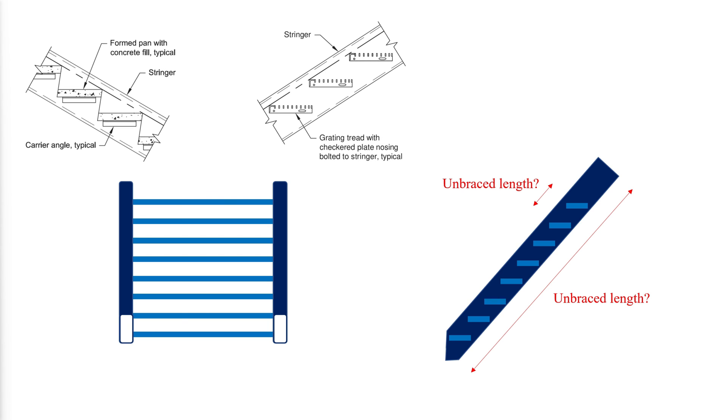An important aspect of stair stringer design is the determination of unbraced length. The type of tread and riser and their connections to the stringer should be considered when determining the unbraced length, as these elements may or may not fully brace the stringer along the length. The unbraced length is the most critical decisive factor of lateral torsional buckling strength in flexure.